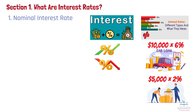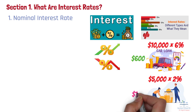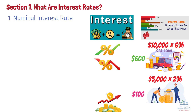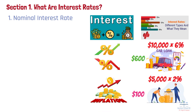Let's break this down. On that $10,000 car loan, you'll pay $600 in interest over a year. On the savings account, you'll earn $100 in interest annually. These simple calculations use the nominal interest rate, which doesn't account for inflation.